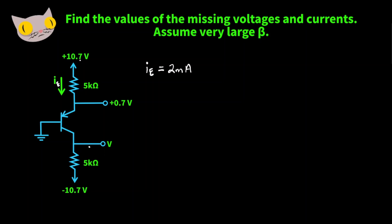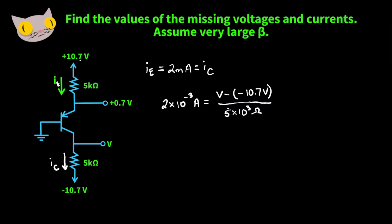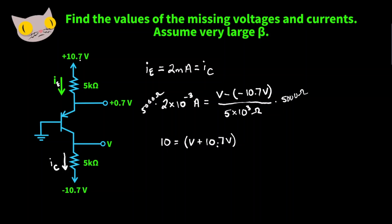Next we have to find this voltage value, and to do that we need a current. There's a current coming down — that's the collector current. With very large common emitter gain, the collector current equals the emitter current. So we take our collector current, 2 times 10 to the negative third amps, and set that equal to V minus negative 10.7 volts over 5,000 ohms. Multiplying both sides by 5,000 gives us 10 equals V plus 10.7 volts. Subtracting 10.7 from both sides gives us negative 0.7 volts for our missing voltage.